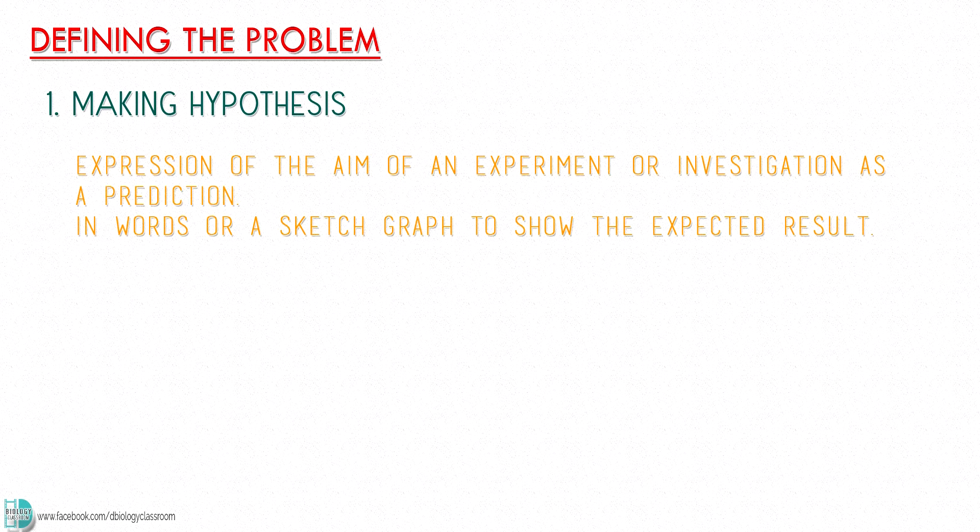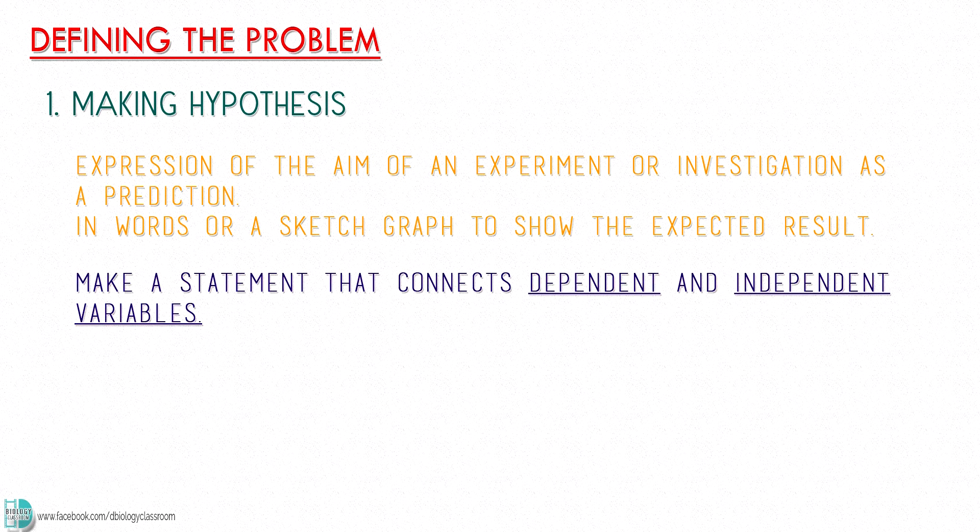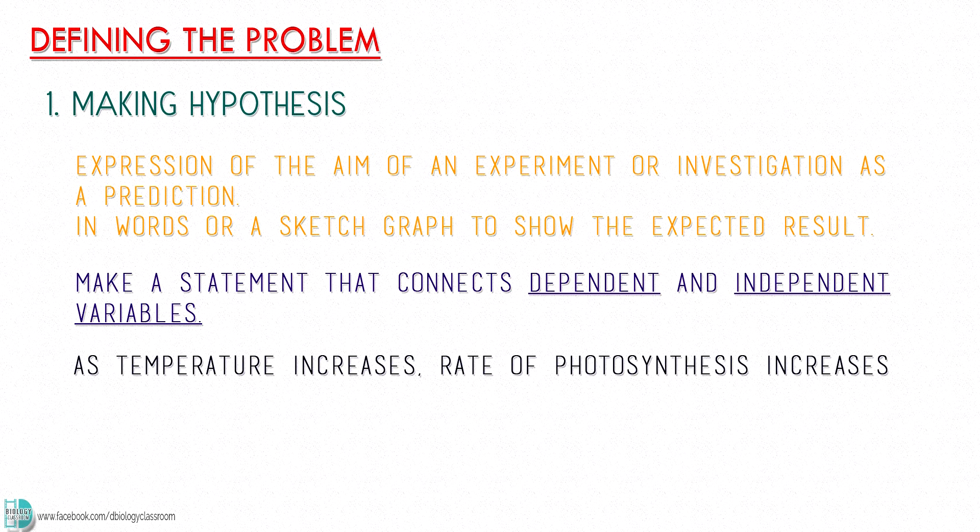There are two things you'll be tested in this section. Number one, making hypothesis. A hypothesis is an expression of the aim of an experiment or investigation as a prediction. It can be done in words or in the form of a sketch graph showing the expected result. You should make a statement that connects dependent and independent variables. For example, as temperature increases, rate of photosynthesis increases.